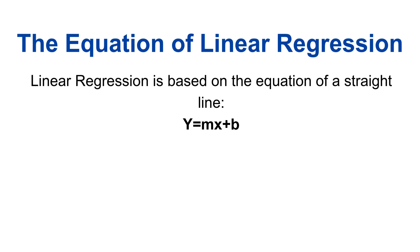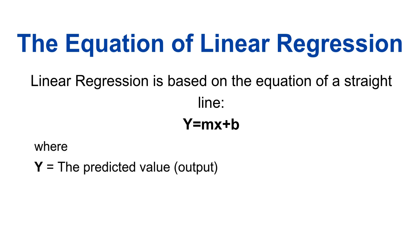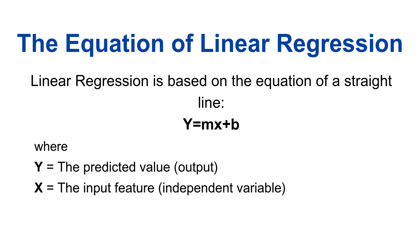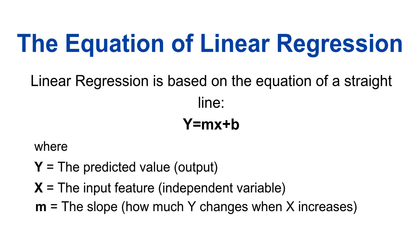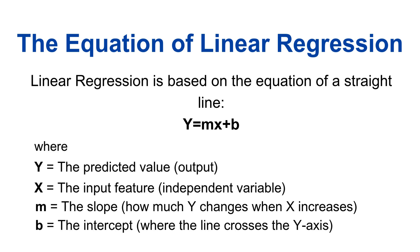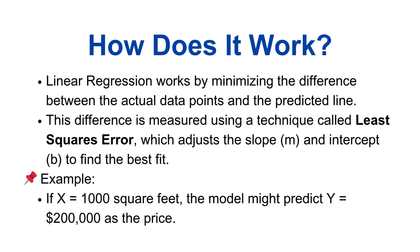In this graph, the blue dots represent actual data points while the red line is the predicted relationship between square footage and house prices. Linear regression is based on the equation of a straight line: Y = mX + b, where Y is the predicted value or output, X is the input feature or independent variable, m is the slope (how much Y changes when X increases), and b is the intercept where the line crosses the Y-axis. Linear regression works by minimizing the difference between the actual data points and the predicted line, using the least squares error technique which adjusts the slope m and intercept b to find the best fit.